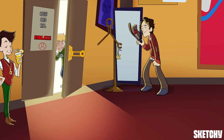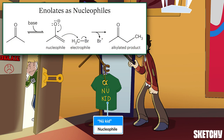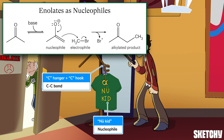So what can we do with the deprotonated alpha carbons of enols and enolates? We've got a new kid t-shirt here to remind you that these molecules are nucleophilic at the alpha position, which means they can form new bonds with all different kinds of electrophiles. These nucleophiles can even bond to carbon atoms to form a new carbon-carbon bond, which you can remember by the fact that the new kid T's C hanger is bonded to the rack's C knob.